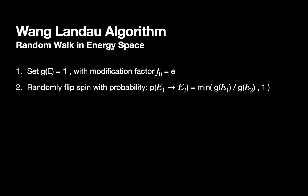Otherwise, it's accepted with probability of g(E1) divided by g(E2), where E1 is the energy before and E2 is energy after the spin is flipped.